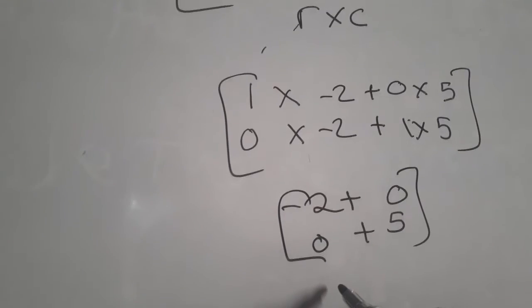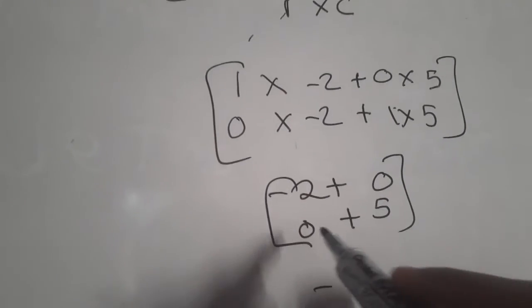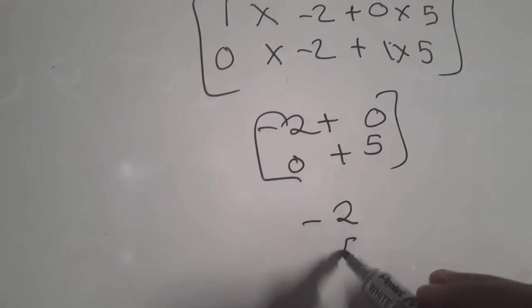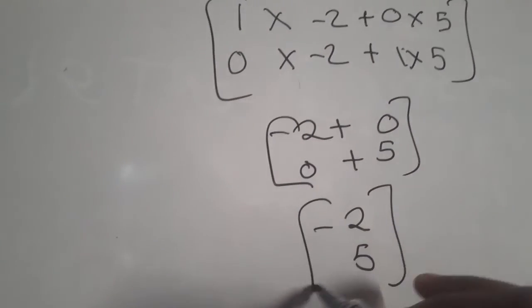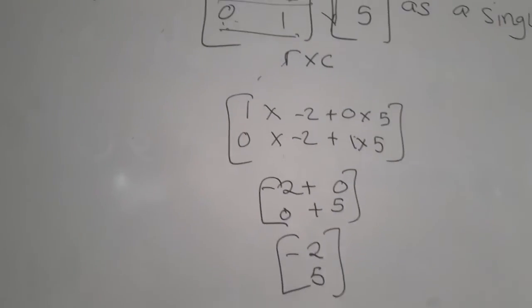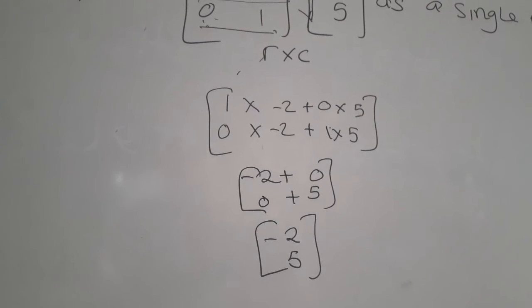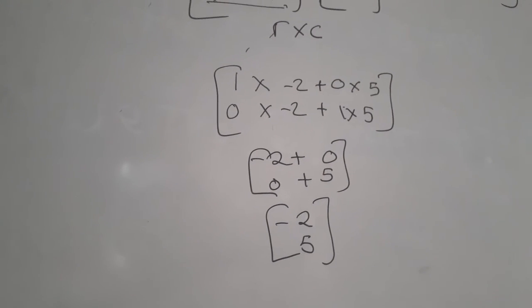Negative two plus zero, we have negative two. Then zero plus five, we have five. So that's how we convert two matrices as a single matrix. Thank you for watching.